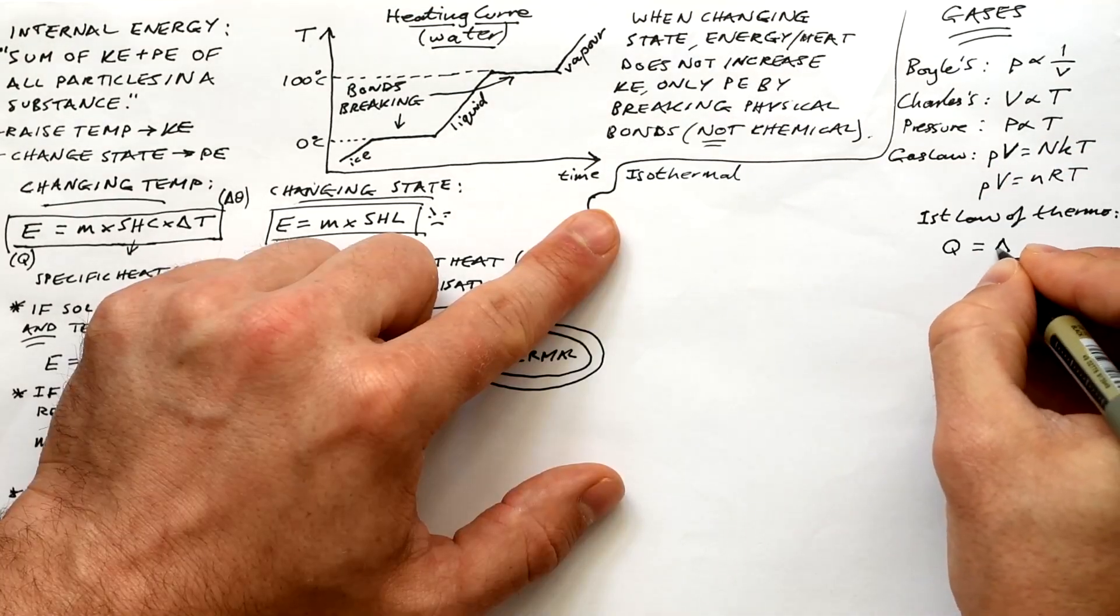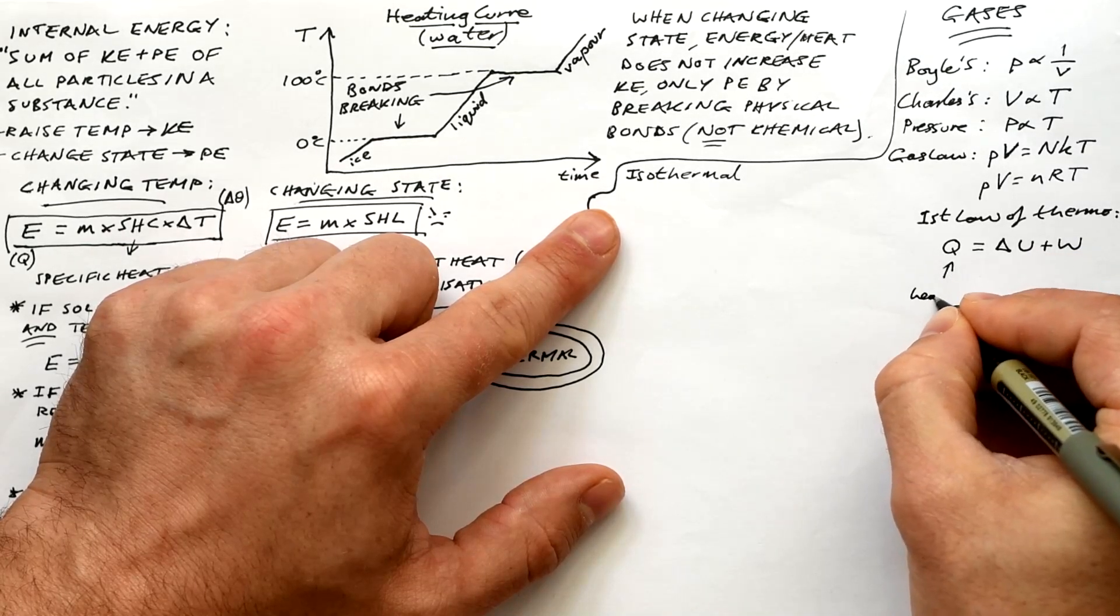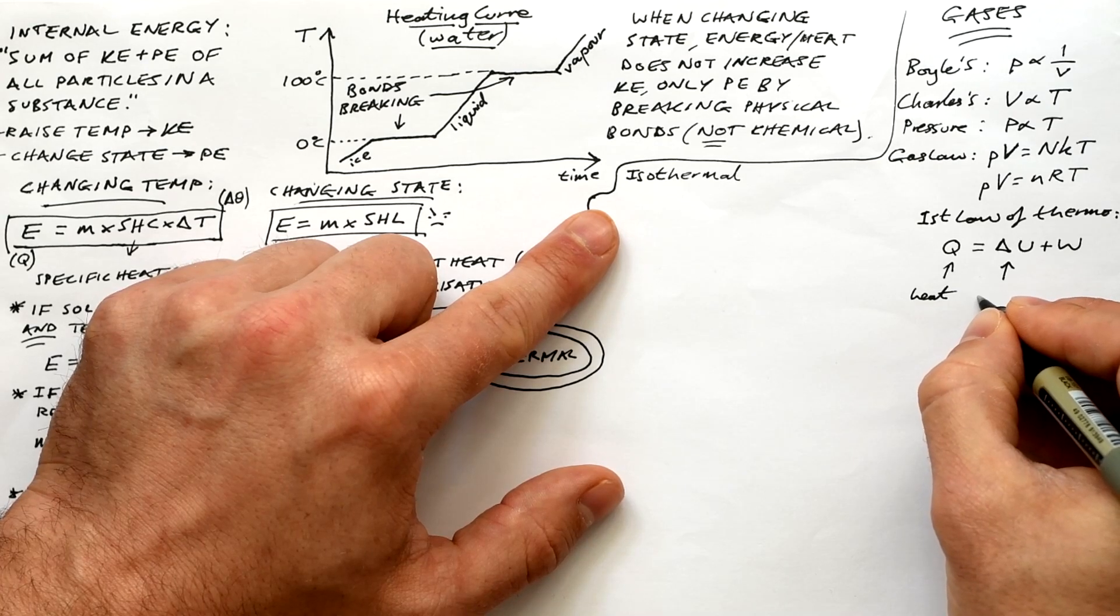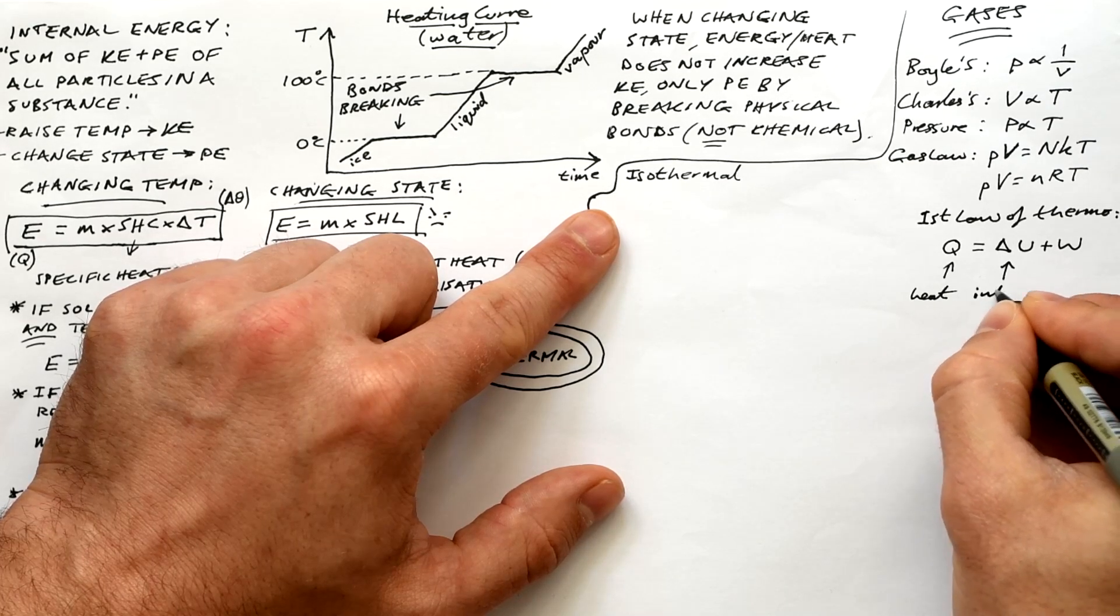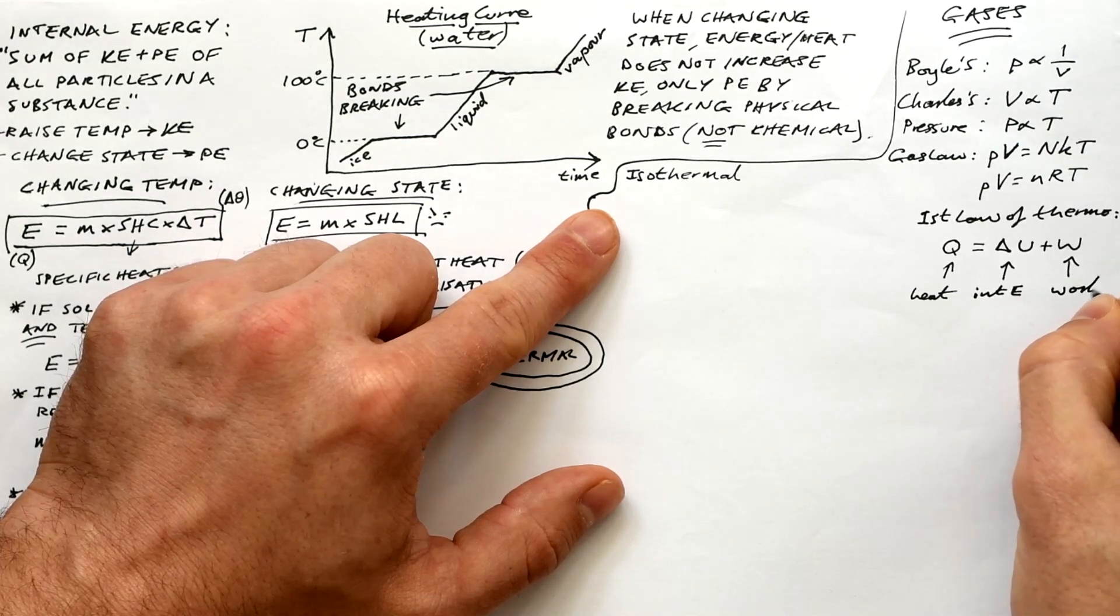Let's do some thermodynamics. The first law of thermodynamics is this. Q equals delta U plus W. Q being heat that goes into a system, delta U being the change in internal energy. And that's ultimately temperature. And W is work done. And a gas has to expand in order to do work.